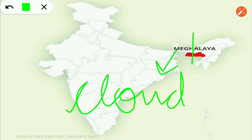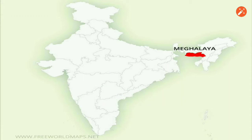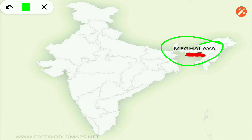Alaya means a residential place. So Meghalaya means the house of clouds. The cloud-shaped state is Meghalaya — the residential place of clouds. And Meghalaya also has the highest rainfall in India.